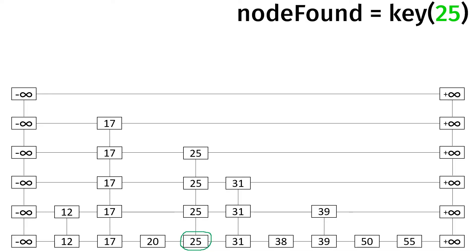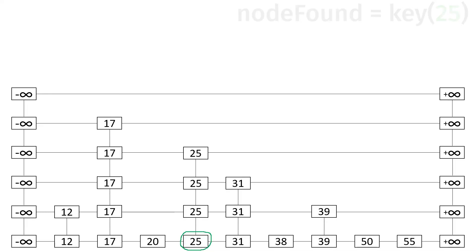We confirm the node key equals 25, so we can delete. All we have to do is worry about the next and previous references. 20's next reference was referencing 25, but now we bypass that — it has to reference 31. 31's previous reference has to go to 20, and 20's next reference goes to 31. So we're bypassing 25 and getting rid of the references there.